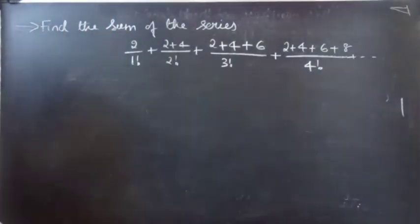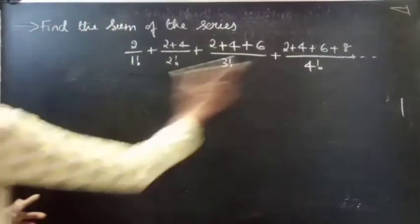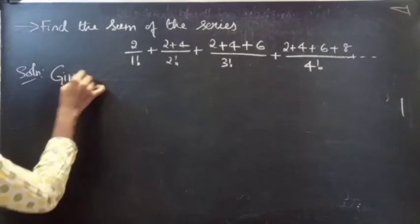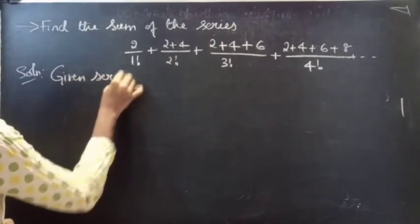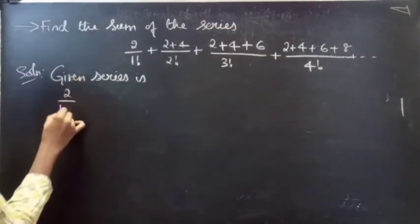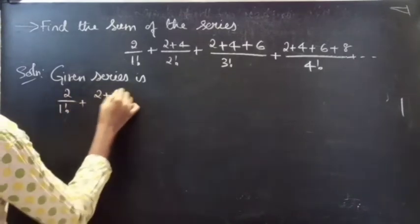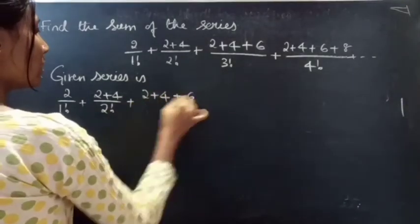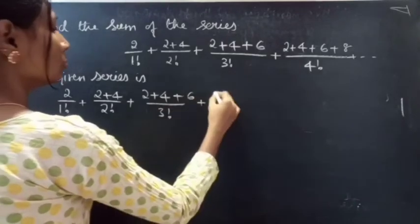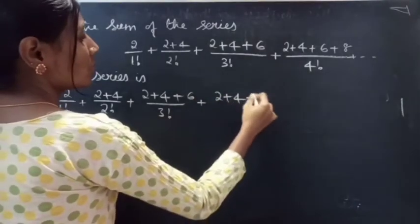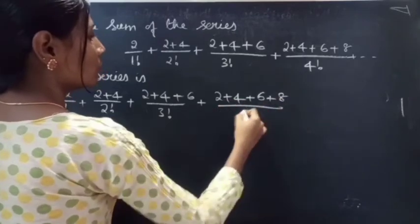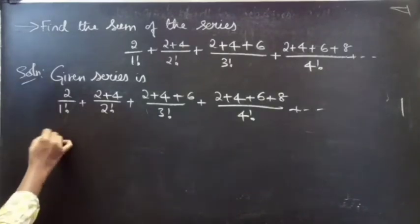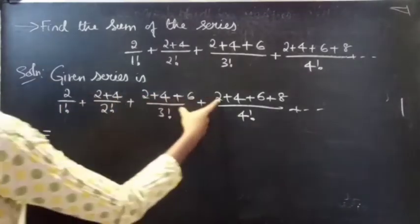We have to find the sum of this given series. Solution: The given series is 2/1! + (2+4)/2! + (2+4+6)/3! + (2+4+6+8)/4! + so on. Here you can take 2 common from the numerator.